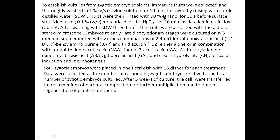Zygotic embryo explants from immature fruits were washed with 1% Sablon solution for surface sterilization, followed by distilled water, then rinsed with 90% ethanol. Embryos were removed from the fruit and cultured on MS medium with various hormonal concentrations — hormones like 2,4-D and benzyl aminopurine — tested either alone or in combination with other synthetic auxins, each optimized for maximum yield of azadirachtin.